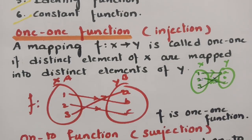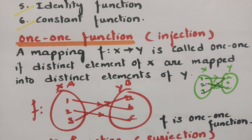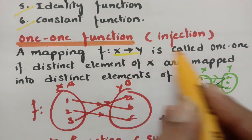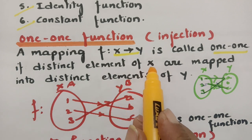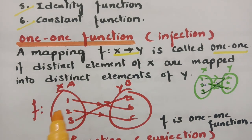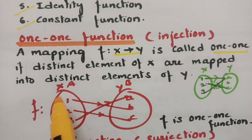One-to-one function, or injection function: a mapping f from x to y is called a one-to-one function if distinct elements of x are mapped into distinct elements of y. Different elements of set x should be mapped with different elements of set y.